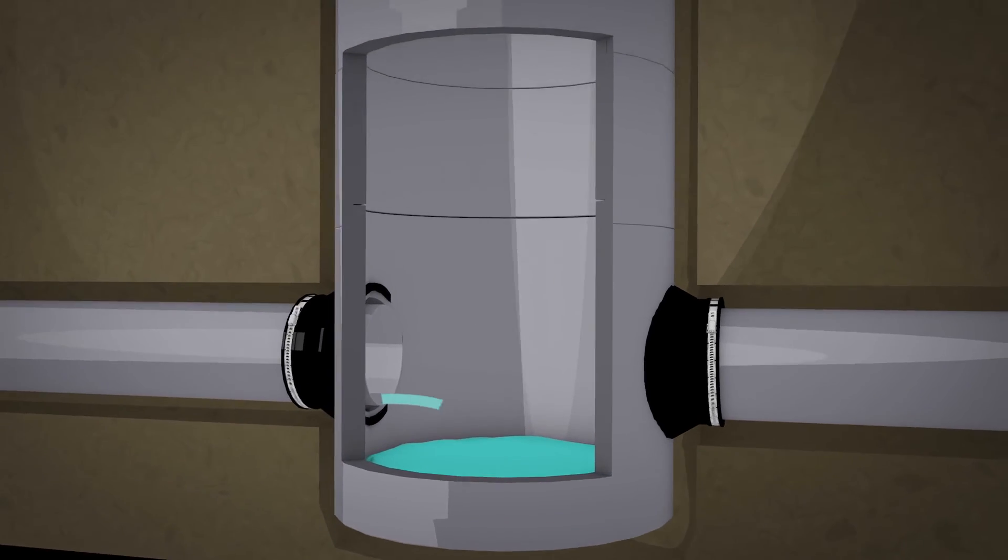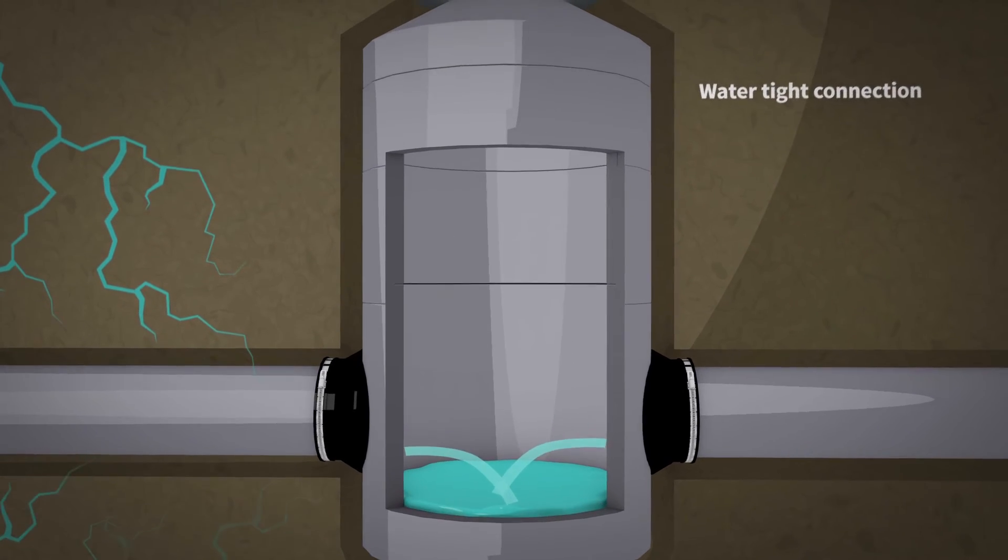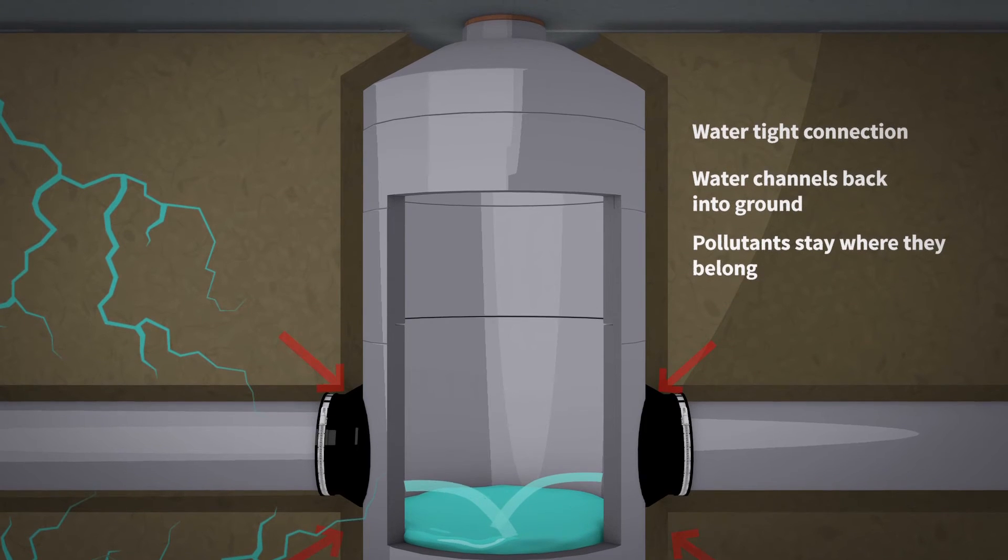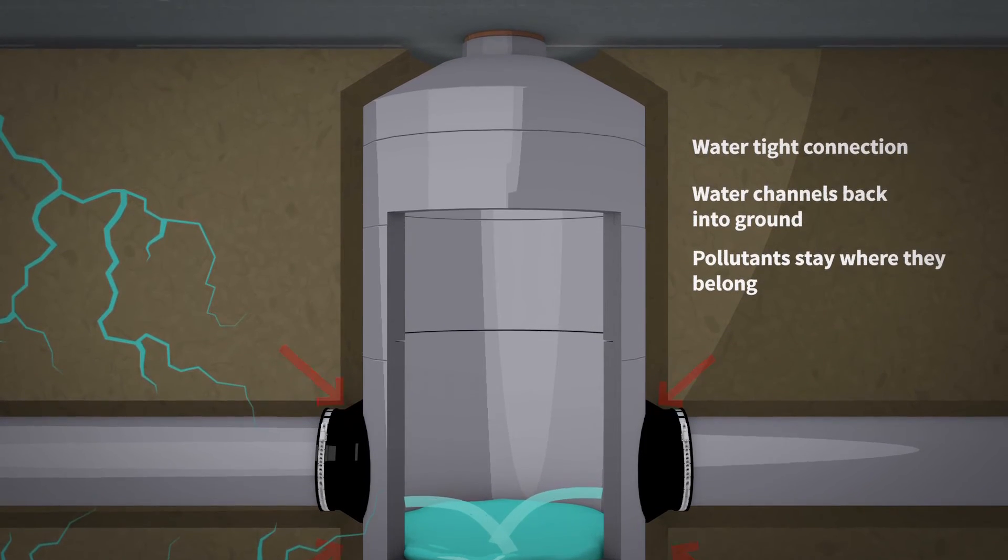You see, as the water seeps into the ground, the watertight connection of this seal keeps the groundwater outside of the structure. The water goes where it's supposed to, back into the ground through natural channels.